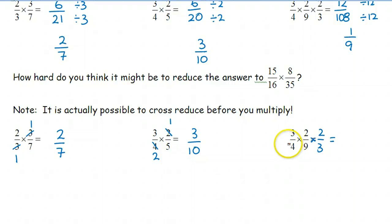The four and the two can both cross-reduce. These both divide by two. So four divided by two is two, and two divided by two is one. But notice, now we have a two in the denominator and two in the numerator. And these can cross-reduce as well. Both of those divide by two.